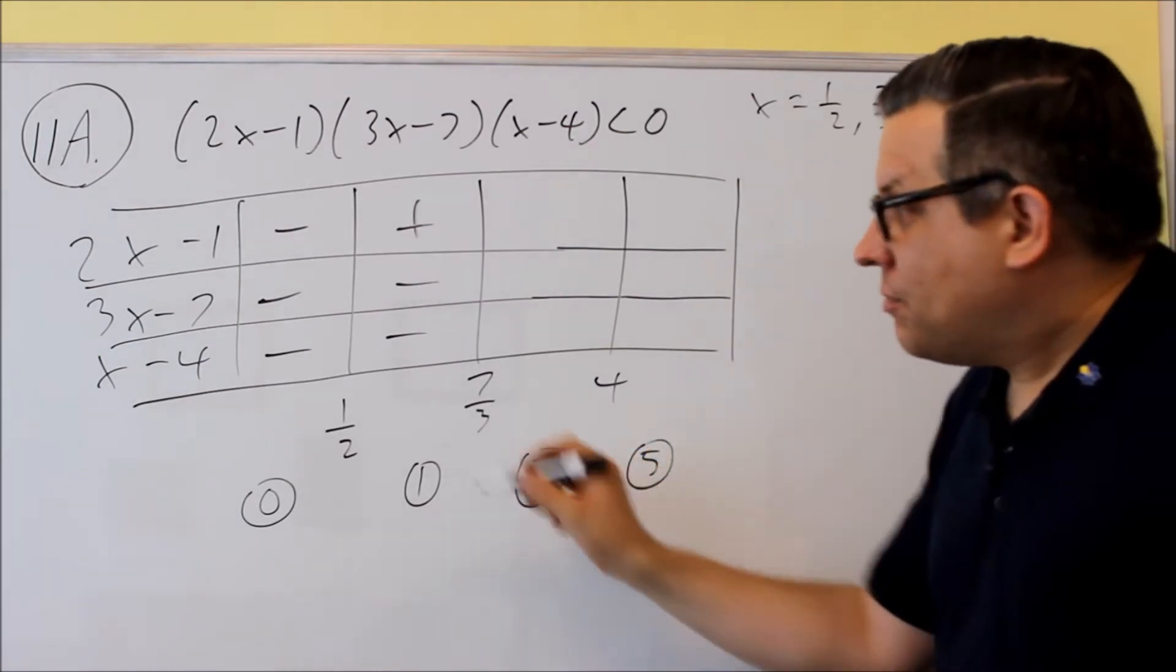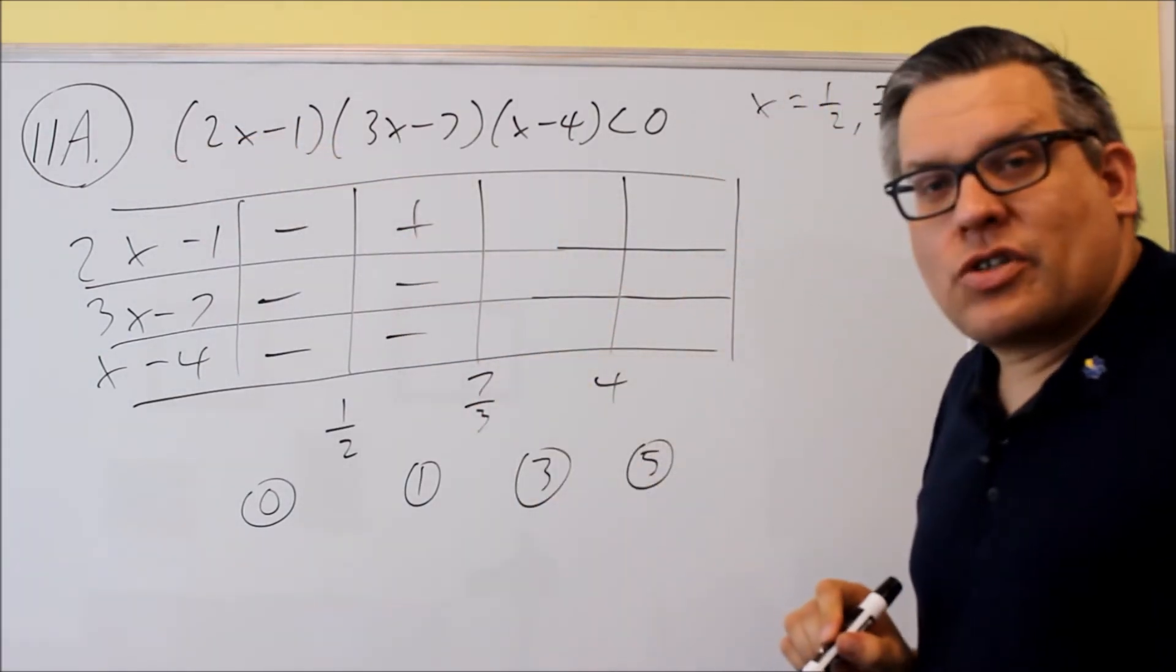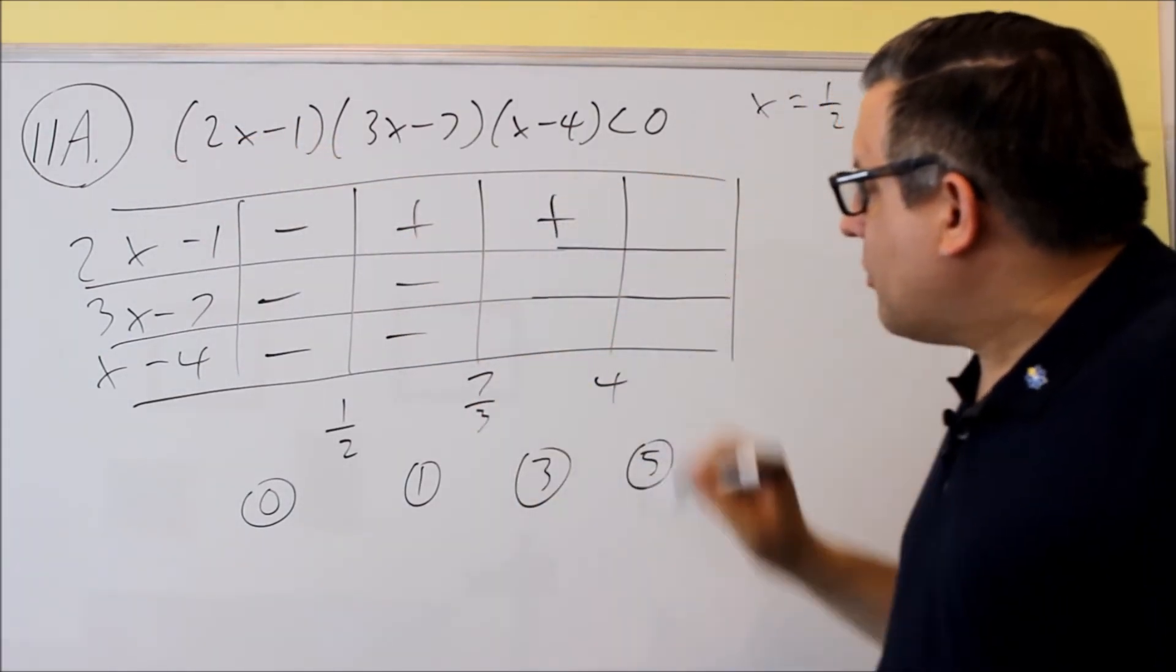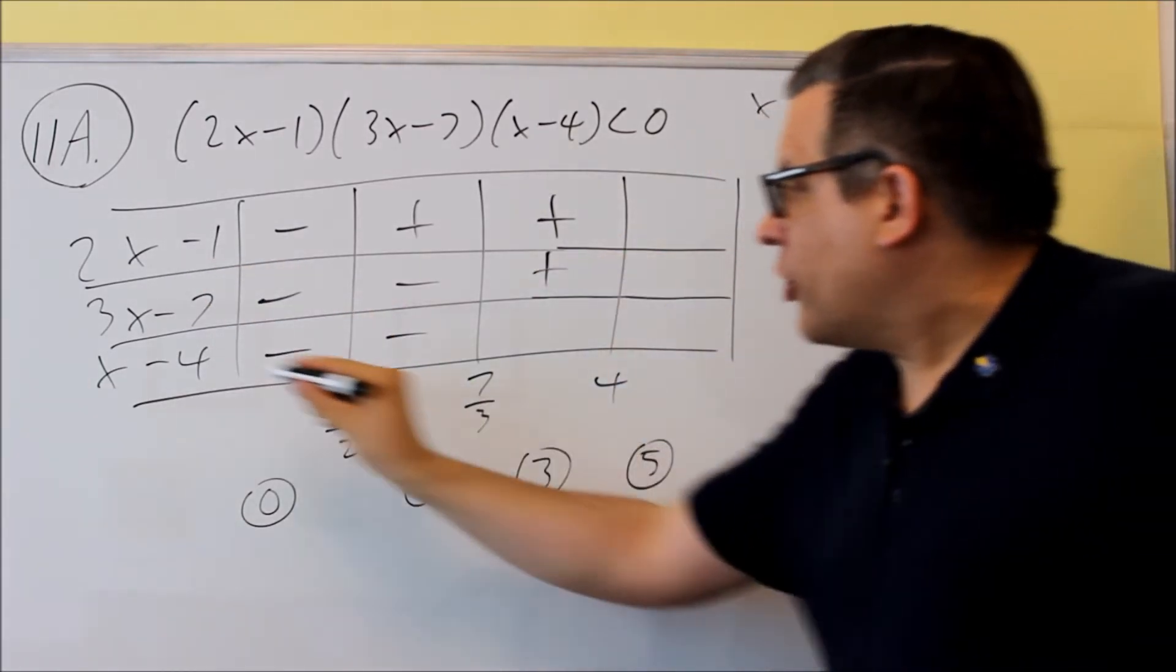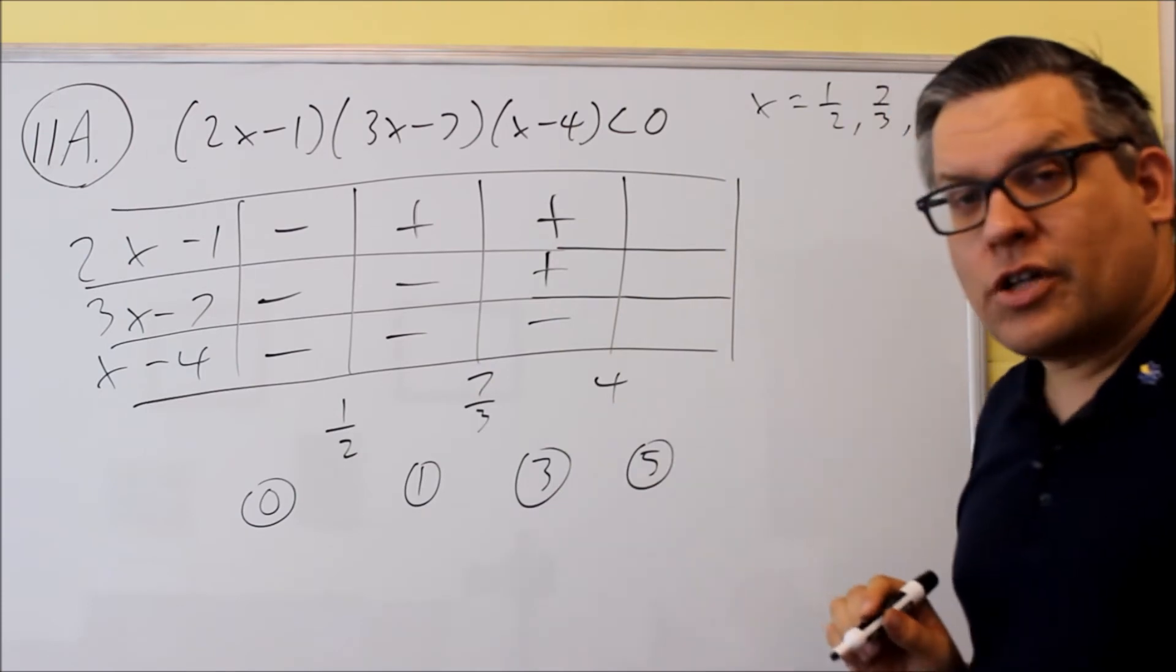Next I'll put in three. Two times three is six, then minus one is a positive number. Three times three minus seven is a positive number, but three minus four is negative.